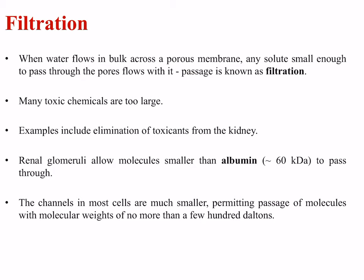Another method of transport employed for toxicants is filtration. When water flows in bulk across a porous membrane, any solute small enough to pass through the pores flows with it. However, many toxic chemicals are too large for this. An example is the elimination of toxicants from the kidney: renal glomeruli allow molecules smaller than albumin, around 60 kilodaltons, to pass through, while channels in most cells permit passage of molecules with molecular weights of only a few hundred daltons.